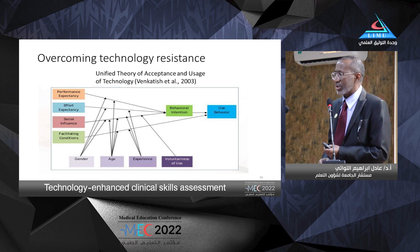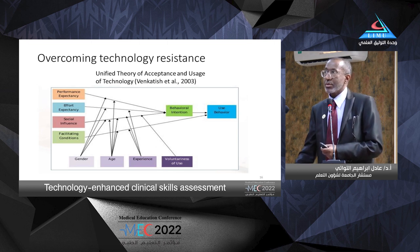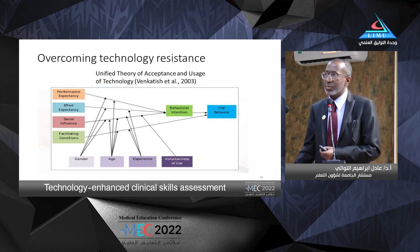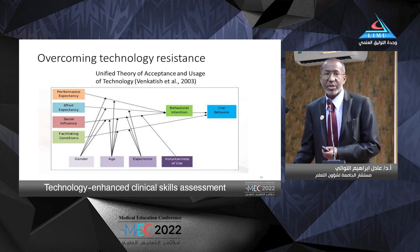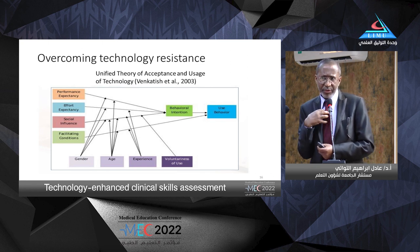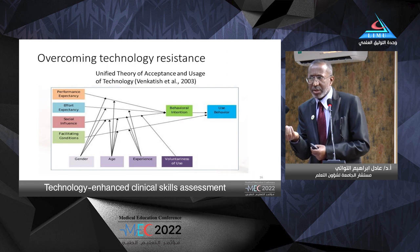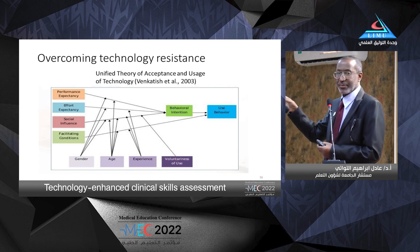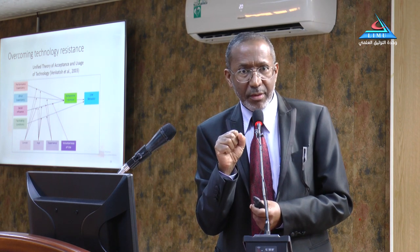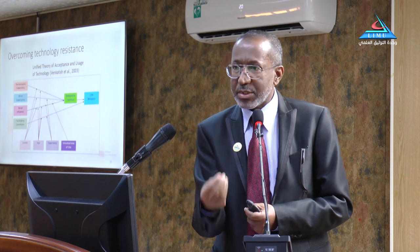This model was updated by Venkatesh in 2003, adding two more moderators. The usefulness and ease factors remain — renamed performance expectancy and effort expectancy. He added social influence and facilitated conditions. Social influence means that if I perceive that people who are important to me think I should use that technology, then I am most likely going to use it. So the institution should convey to people inside that they are willing and they'd like the staff to adopt that technology.